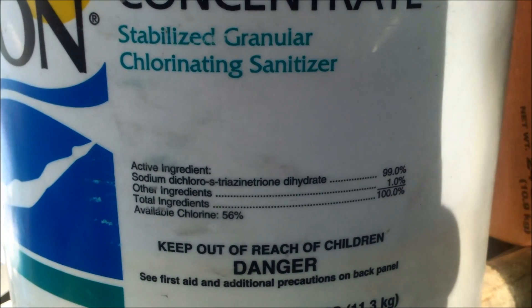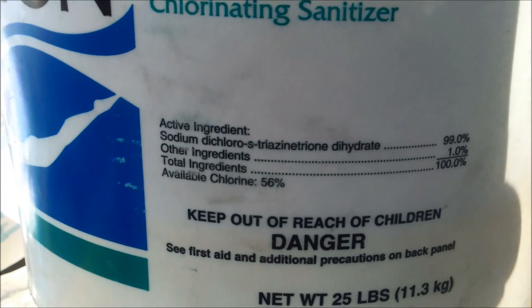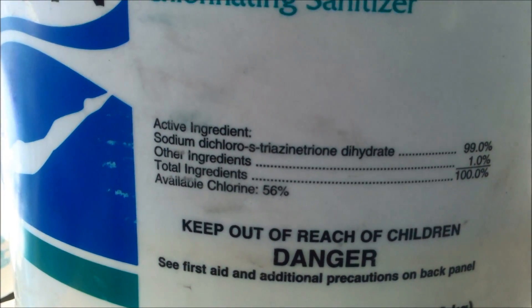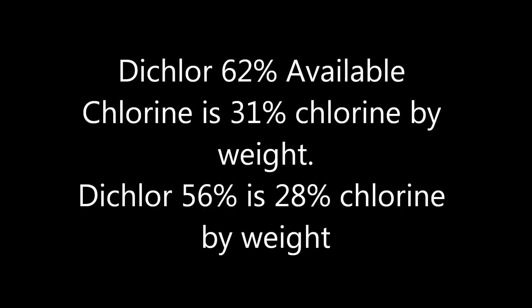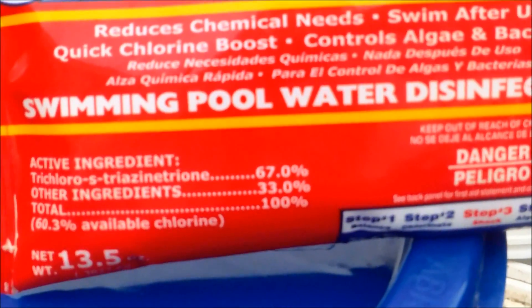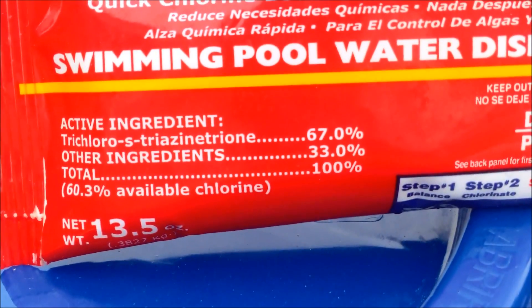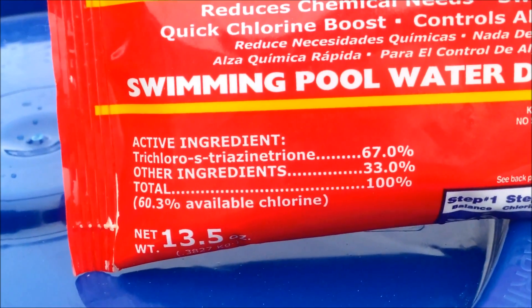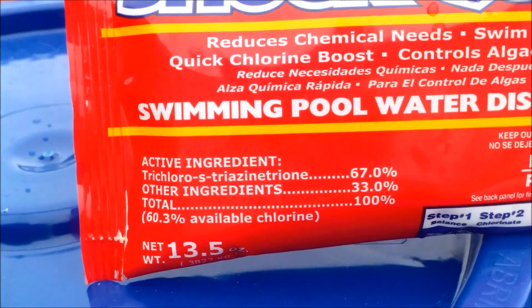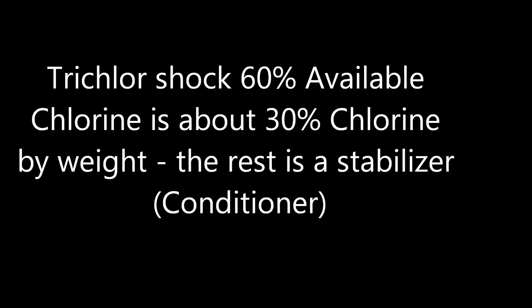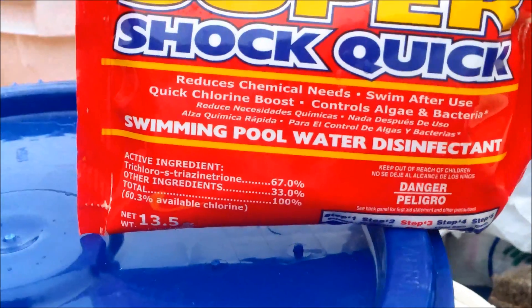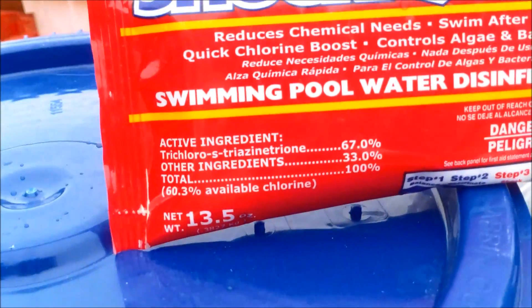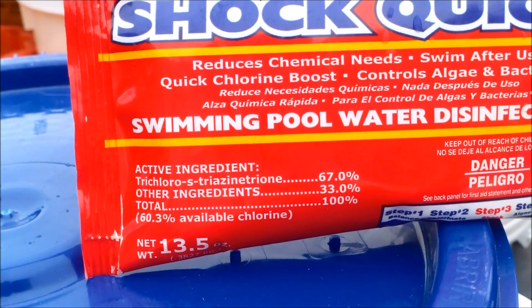You calculate the stabilizer basically the same way: take the molecular weight of the cyanuric acid and divide it by the formula weight, and that gives you the amount of conditioner in the dichlor and trichlor products. Here's a bag of trichlor shock — it has 67% trichlor purity and available chlorine of 60.3%. Divide that in half and you get a chlorine by weight of about 30%. The remaining percentage of the weight is the stabilizer or conditioner in the product.